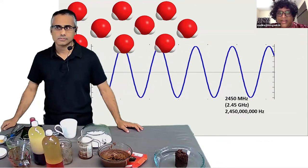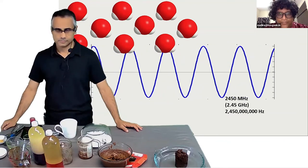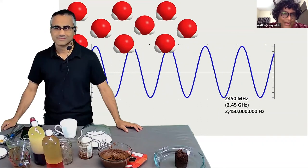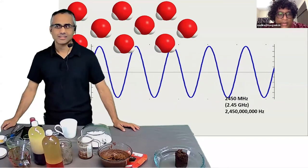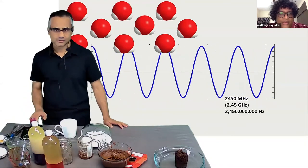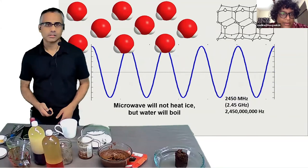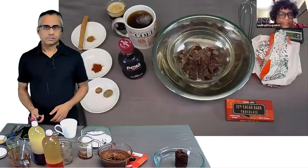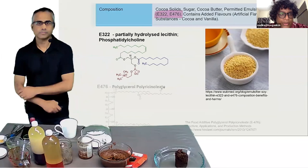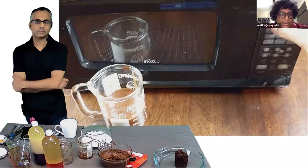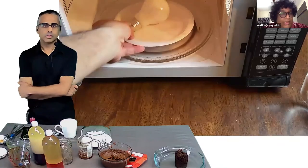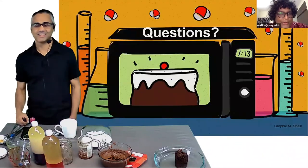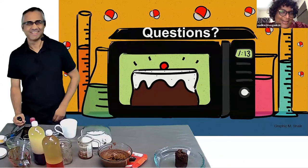Someone missed the earlier part and asks about 'removing a bulb before putting the egg in the microwave.' To clarify: he was demonstrating how electrons work inside a microwave using a light bulb placed inside the microwave cavity — to show how electromagnetic energy moves and excites electrons inside.